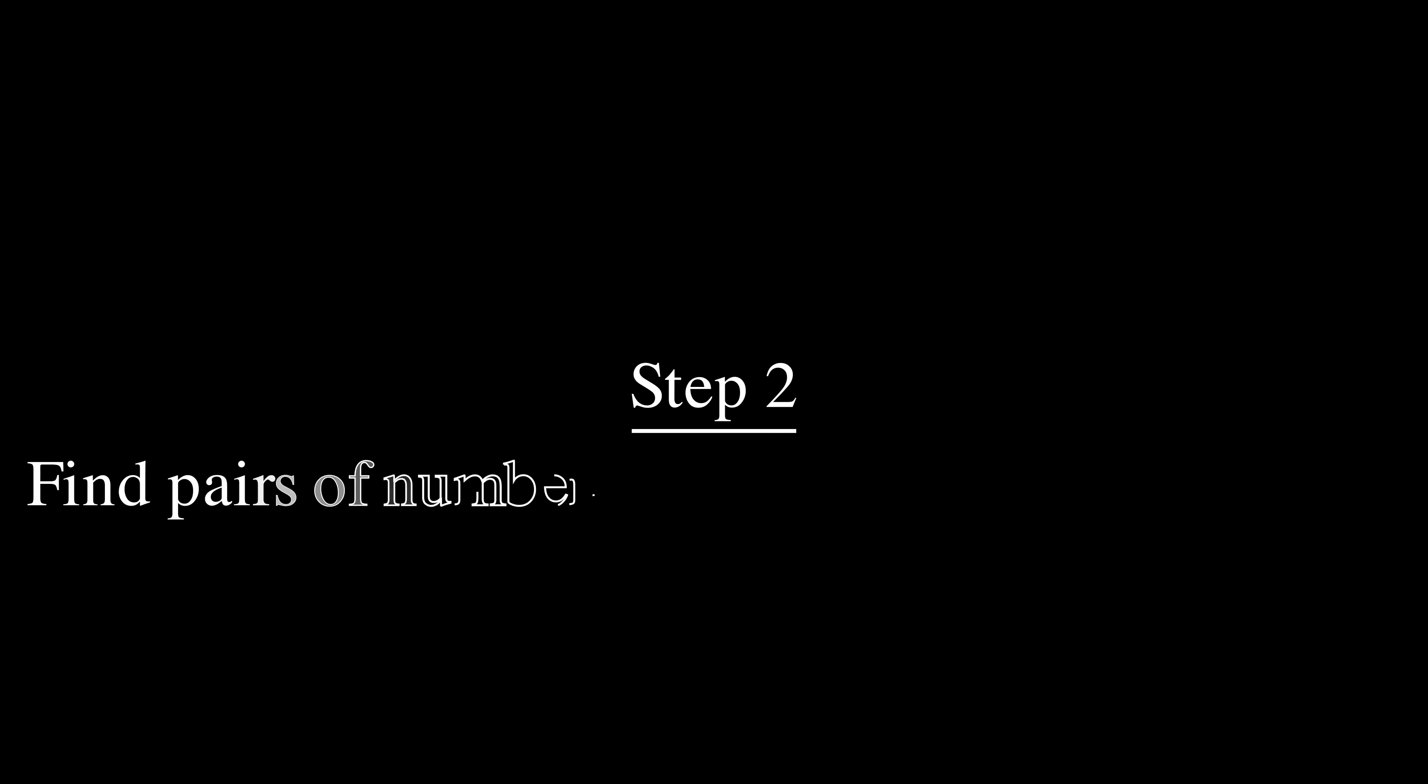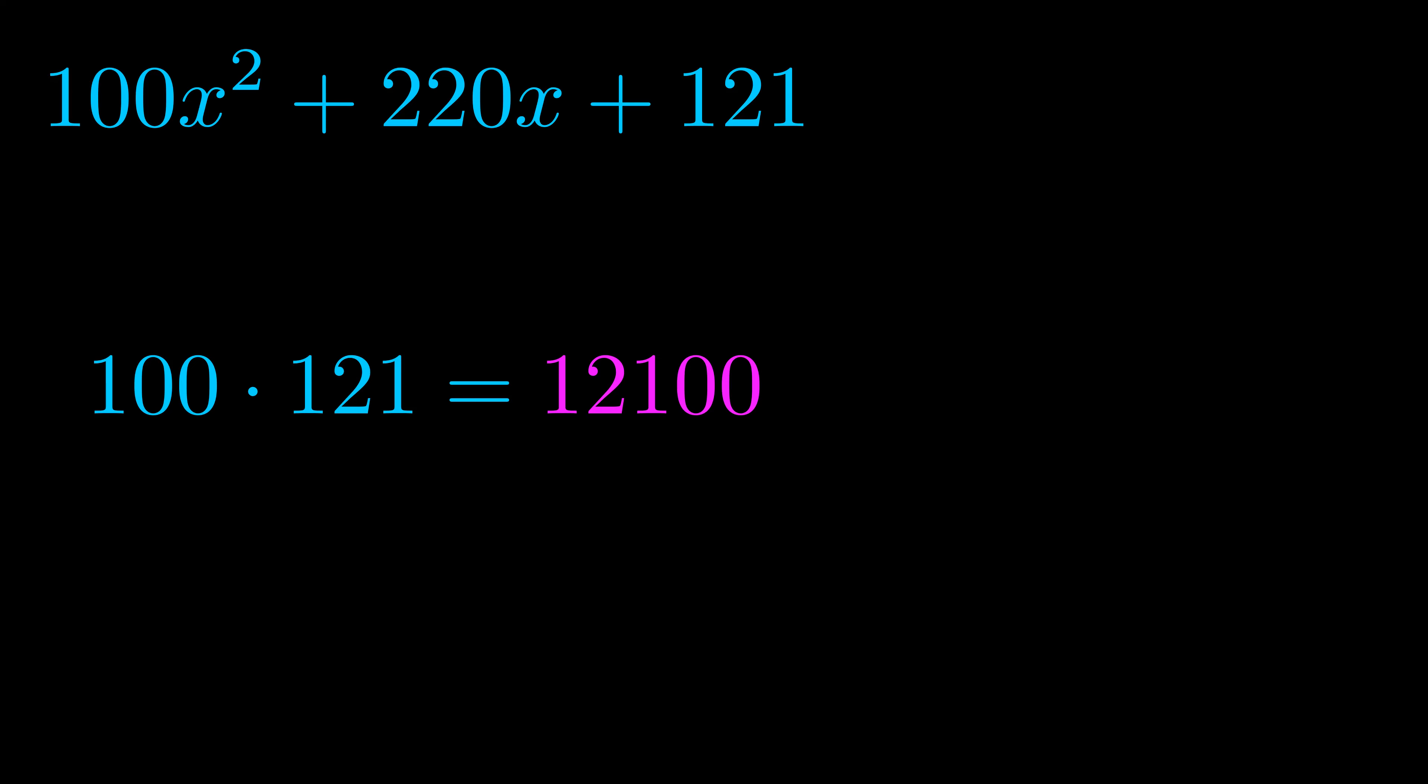Step two is to try to find all of the pairs which multiply to this number. Now you don't really need to find all of them but go ahead and write down as many numbers as you can that multiply to the magenta value for now. Pause the video and resume when you're ready to continue.